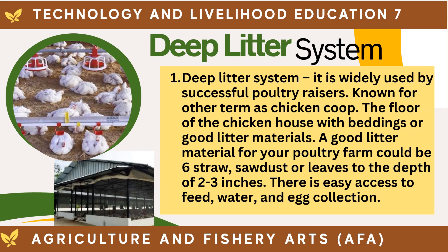The first type of intensive system housing is the deep litter system. It is widely used by successful poultry raisers and known by the other term 'chicken coop.' The floor of the chicken house is covered with bedding or good litter materials. Good litter material could be rice straw, sawdust, or leaves to a depth of two to three inches. There is easy access to feed, water, and egg collection.